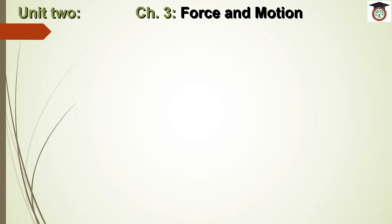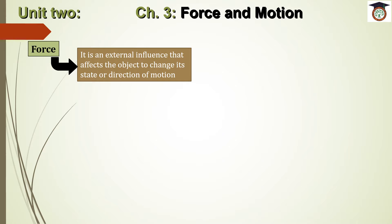We are going to begin by talking about the reason for motion — what is the relation between force and motion. Without force there is no motion, so force is considered the cause of motion. Objects around us move due to the effect of force acting on them, and objects stop due to the effect of a force on them. We can define force as an external influence that affects an object to change its state or direction of motion.